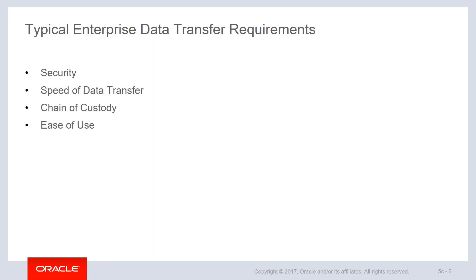Finally, it has to be easy to use. If you have security, speed, and chain of custody but it's not easy to use, it defeats the purpose. The OCI Data Transfer Service has all four of these.